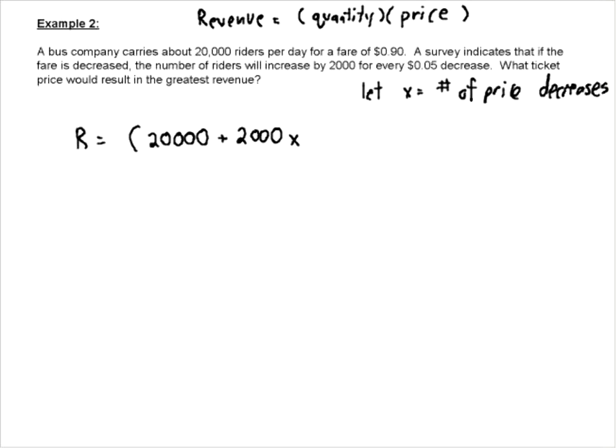time we decrease the price. So that's what that's telling us here, is that every time we decrease the price, we're going to add an additional 2,000. So two price decreases, 4,000. Three price decreases, 6,000, et cetera. That's how we take care of the quantity.